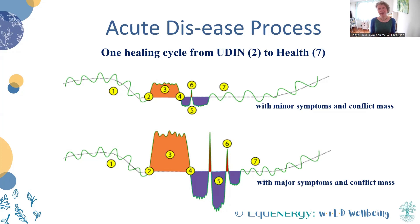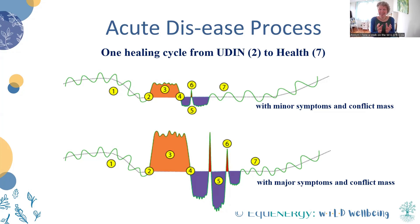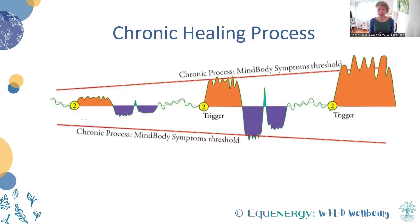However, if at point four we only have a partial shift — so we haven't fully released the whole of the trauma, and we're still, to some extent, holding that trapped ball of emotion, that energy of the trauma still being held within our body — it's like ammunition that can be reactivated and can explode at some point in the future. Then what we experience is chronic ill health, and that can look a little bit like this.